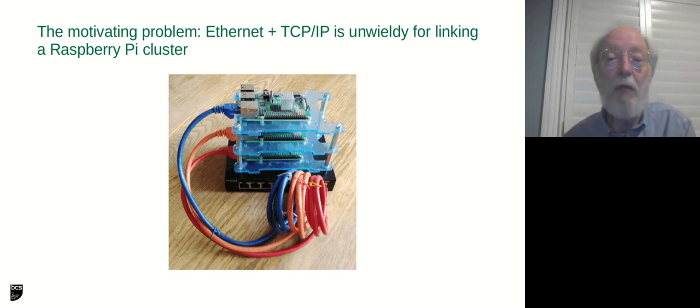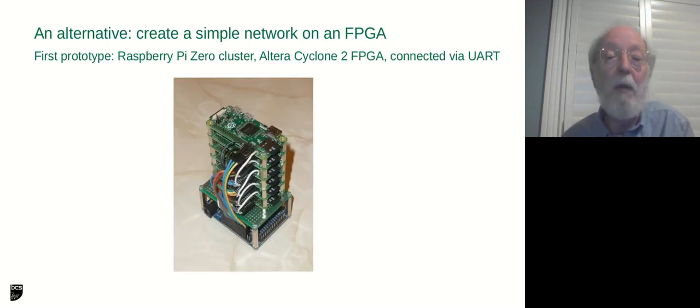The motivating problem in this project is that, like many people, I've been building various clusters of Raspberry Pis. And I find that using Ethernet and TCP IP for networking, which is just the standard that everybody uses, is a bit unwieldy. You end up with a small, elegant pile of Raspberry Pi boards and great big clunky Ethernet cables connecting them and many layers of software that you really don't want. So my initial idea was, why not do my own networking, building a special purpose network on chip on an FPGA to replace the Ethernet switch.